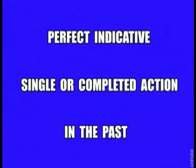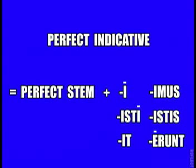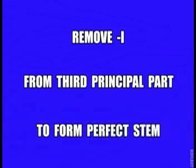The perfect indicative usually indicates a single or completed action in the past. The perfect active indicative is formed by adding e, isti, it, imus, istis, erunt to the perfect stem. If you remove the letter I from the third principal part, you will obtain the perfect stem.